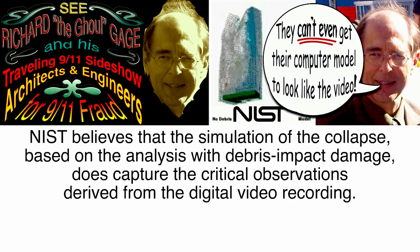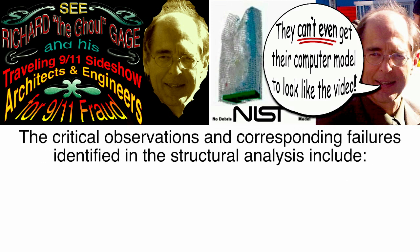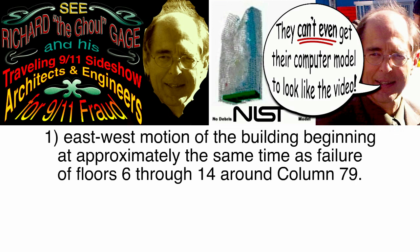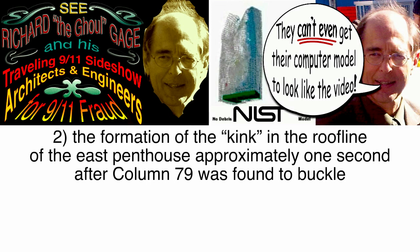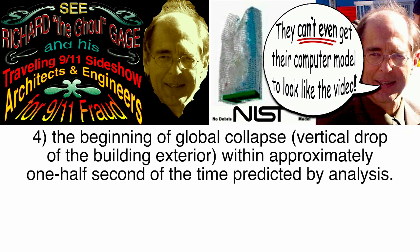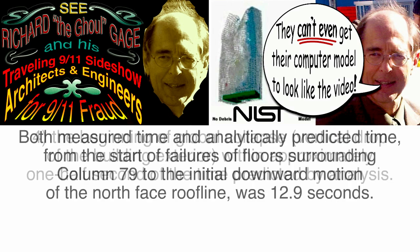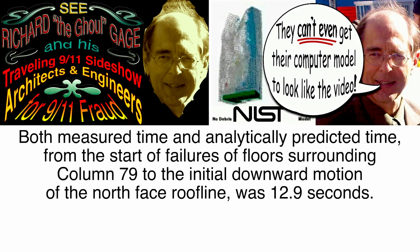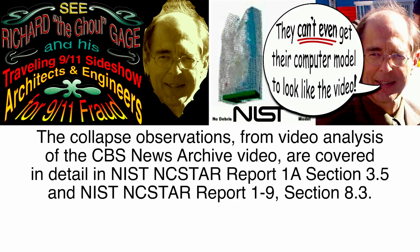NIST believes that the simulation of the collapse, based on the analysis with debris impact damage, does capture the critical observations derived from the digital video recording. The critical observations include: (1) east-west motion of the building beginning at approximately the same time as failure of floors 6 through 14 around column 79; (2) formation of the kink in the roof line of the east penthouse approximately one second after column 79 was found to buckle; (3) window breakage on the east side of the north face; and (4) the beginning of global collapse within approximately one half second of the time predicted by analysis. Both measured and analytically predicted time from failure of floors surrounding column 79 to initial downward motion of the north face roof line was 12.9 seconds.